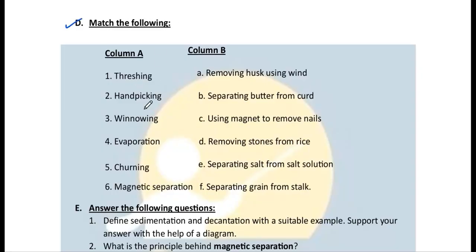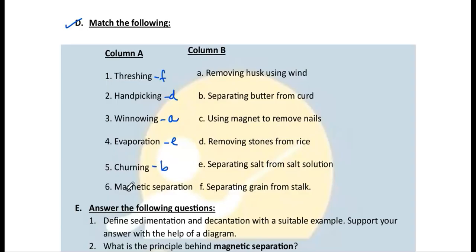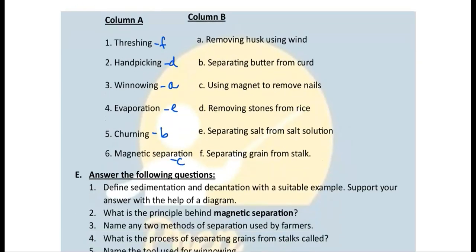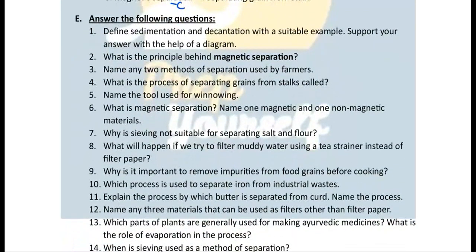Now for match the following. Column A has processes, Column B has what they do. Threshing — (f) removing grain from the stalk. Hand picking — (d) removing stones from rice. Winnowing — (c... d) removing husk using wind. Evaporation — (a) separating salt from salt solution. Churning — (e) separating butter from curd. Magnetic separation — (b) using a magnet to remove iron nails.